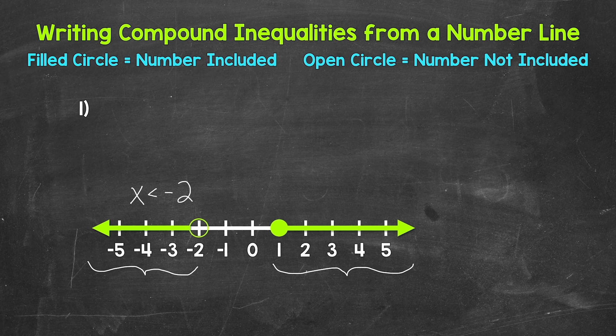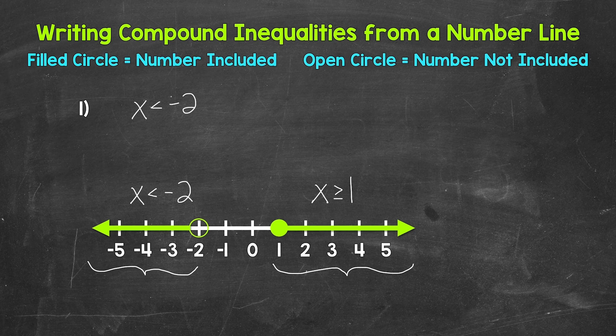Using X for our variable, we have X is less than negative two. For the inequality on the right, we have a closed circle at one, so one is included. Then we have an arrow going right, representing everything greater than one. So we have X is greater than or equal to one. These are our two inequalities that make up our compound inequality, written using OR: X is less than negative two, or X is greater than or equal to one.